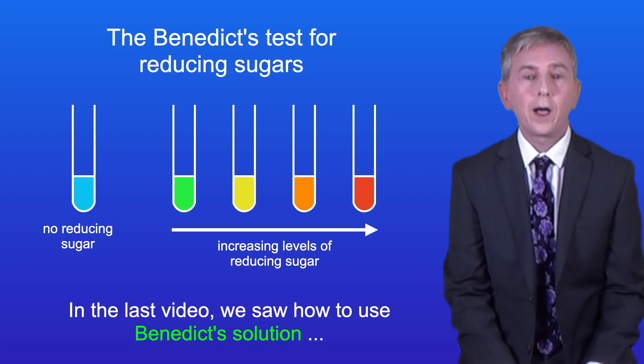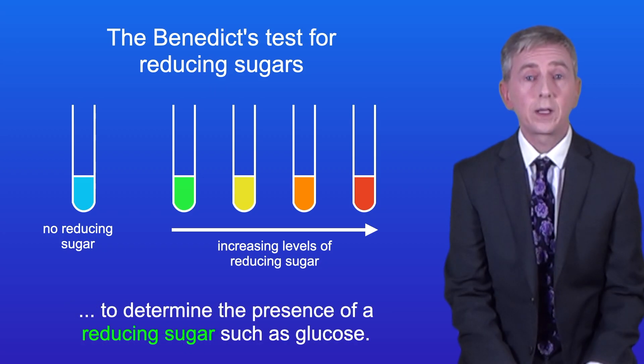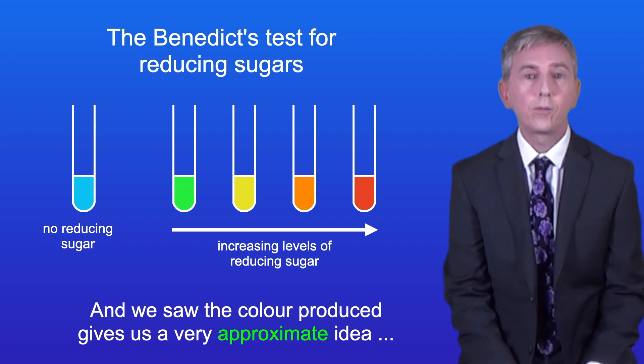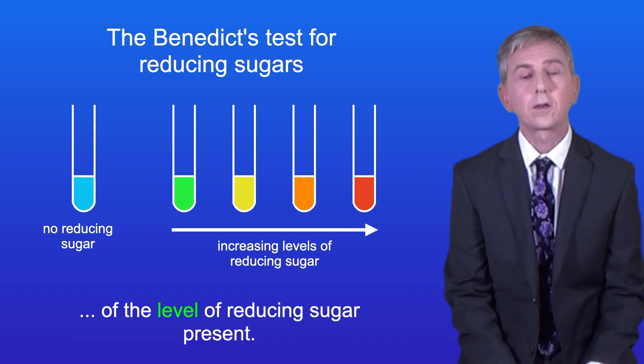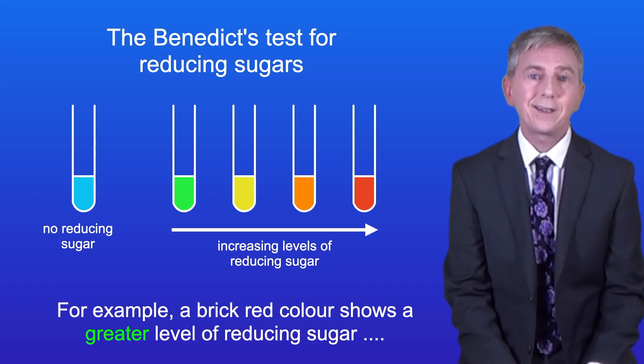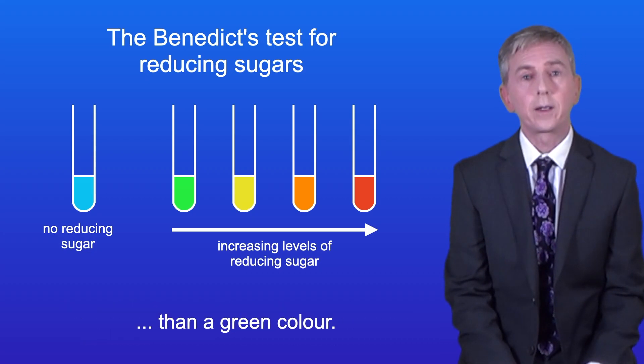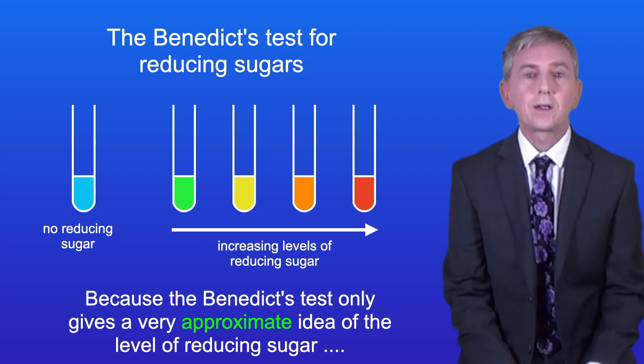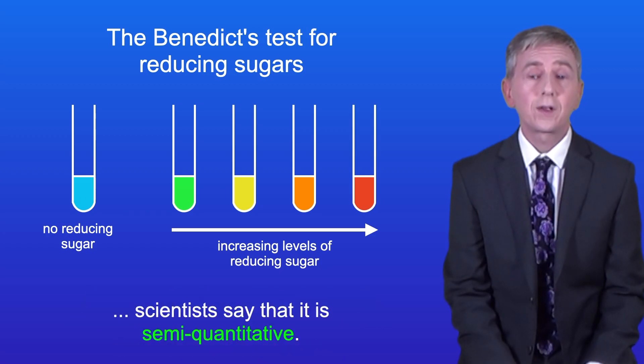In the last video, we saw how to use Benedict's solution to determine the presence of a reducing sugar such as glucose. And we saw the color produced gives us a very approximate idea of the level of reducing sugar present. For example, a brick red color shows a greater level of reducing sugar than a green color. Because the Benedict's test only gives a very approximate idea of the level of reducing sugar, scientists say that it's semi-quantitative.